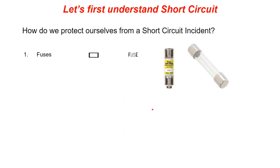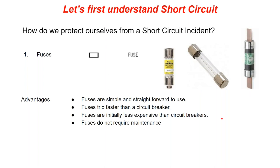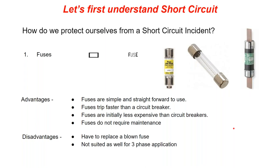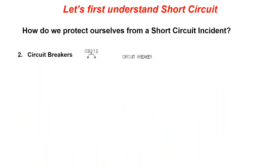Fuses are used to break the circuit quickly. Advantages: they're simple, trip very fast, inexpensive, and require no maintenance. The downside is that you have to replace a blown fuse with the exact same type, which can take time in a factory. Also, in a three-phase application, if one fuse blows, the other two phases could still be live.